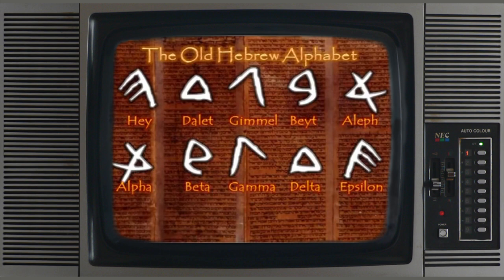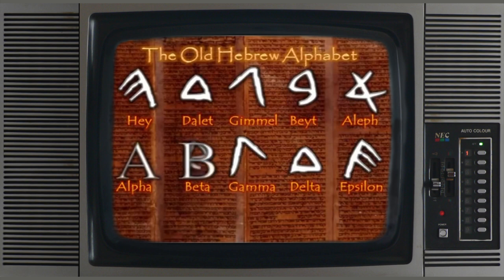The Aleph becomes the Alpha. The Bet becomes the Beta. The Gimel becomes the Gamma. The Dalet becomes the Delta. And the only exception is the He becomes in Greek Epsilon, which means 'plain E.' Over the centuries, these ancient Greek letters evolved into their modern Greek forms.